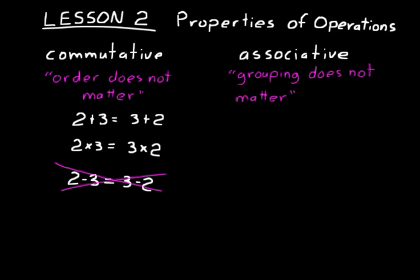We can talk about these relationships in terms of variables as well. For any numbers A and B, we could say A plus B is the same thing as B plus A — that would be the commutative property for addition. For multiplication, we could say A times B is equal to B times A.